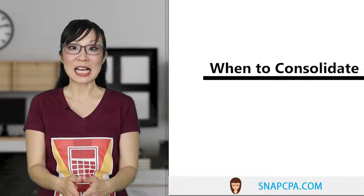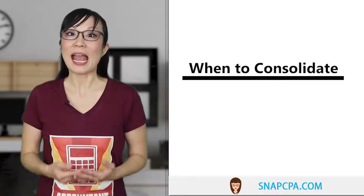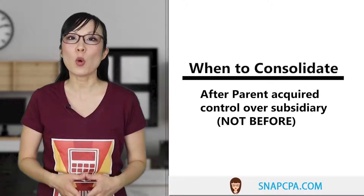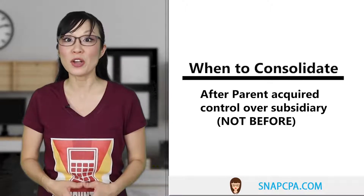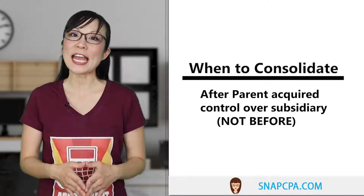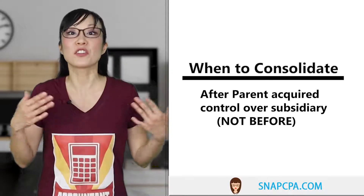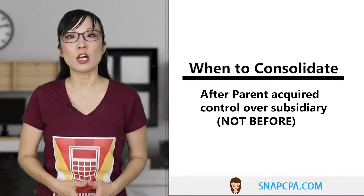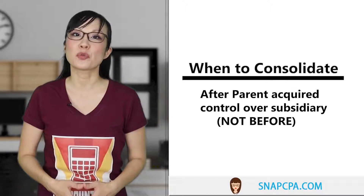When do we consolidate? We consolidate beginning after the parent acquires control. So if parent acquires control over the sub on June 30th, we start to add in the sub's revenues and expenses beginning after the acquisition date. Parent bought on June 30th, then parent starts to reap the benefits after the purchase.